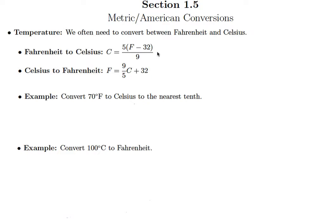If you want to go from Fahrenheit to Celsius, you use this formula right here. You plug your Fahrenheit temperature in for F, and then see what that equals, and that'll be your Celsius temperature. And then same here — to go from Celsius to Fahrenheit, we're plugging in our Celsius temperature for C, and then seeing what Fahrenheit temperature comes out.